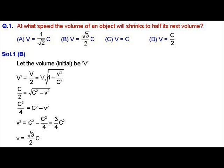That implies c²/4 equals c² minus v². That implies v² equals c² minus c²/4, which equals 3/4 c². That implies v equals square root of 3/4 c², which gives v equals √3/2 c.